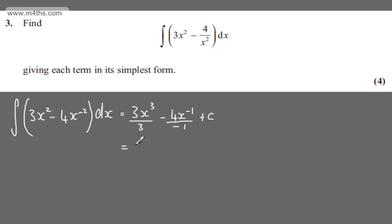So tidying this up, we're going to have x cubed plus 4x to the power of minus 1 plus c. You can of course write this as x cubed plus 4 over x plus c.